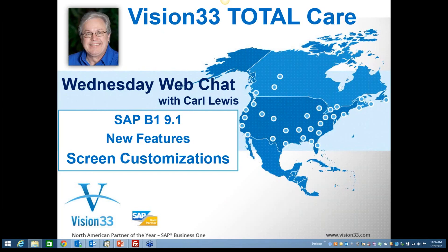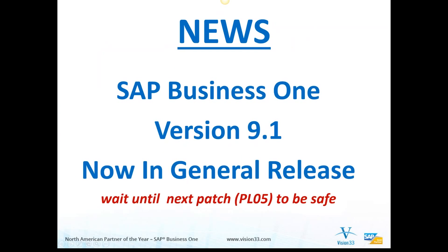Before we get started, let's visit a few announcements. As a reminder, version 9.1 is now in general release. I encourage you to wait until the next patch is out. Patch level 4 was the base for version 9.1, but over the first 30 to 60 days, a lot of bugs are found by early adopters — those that like living on the bleeding edge. They get fixed, and there will be a lot of little bug fixes and pieces of code added to make it just right in patch level 5. That's due out at any moment, and I encourage you to wait for that patch level to further mitigate the risks associated with changing versions.